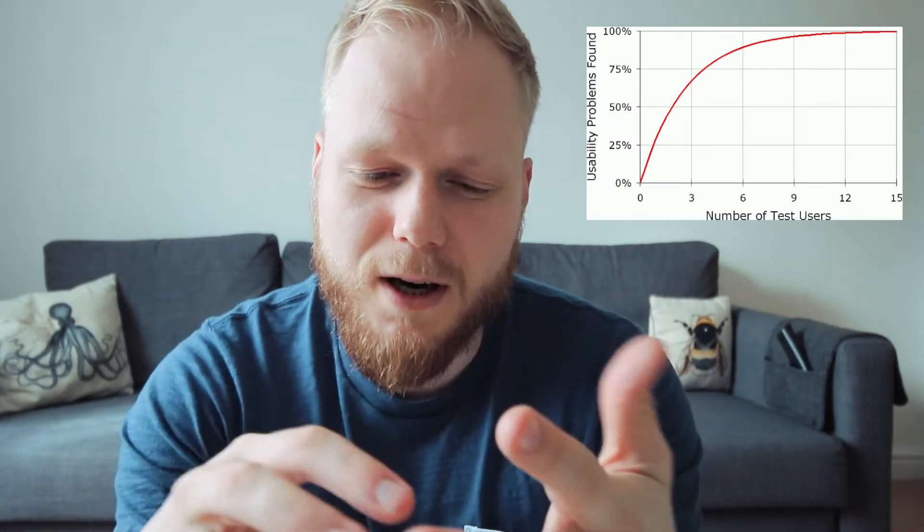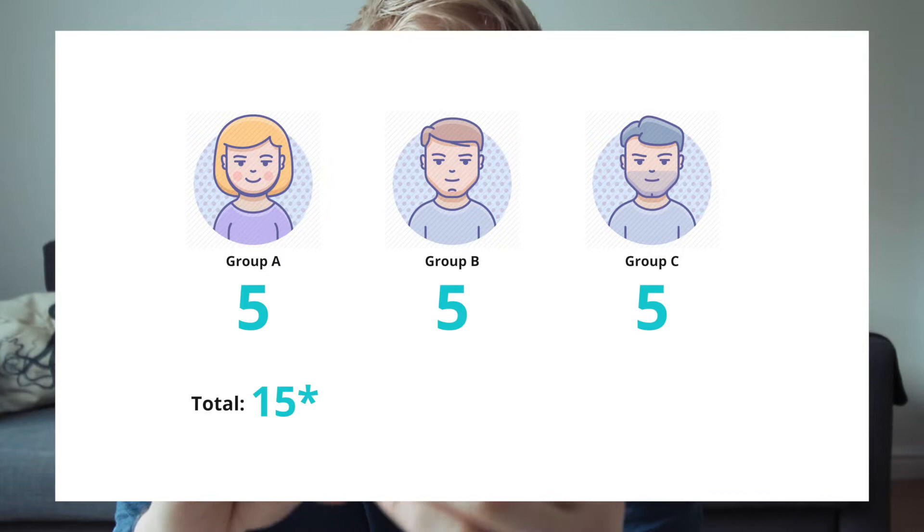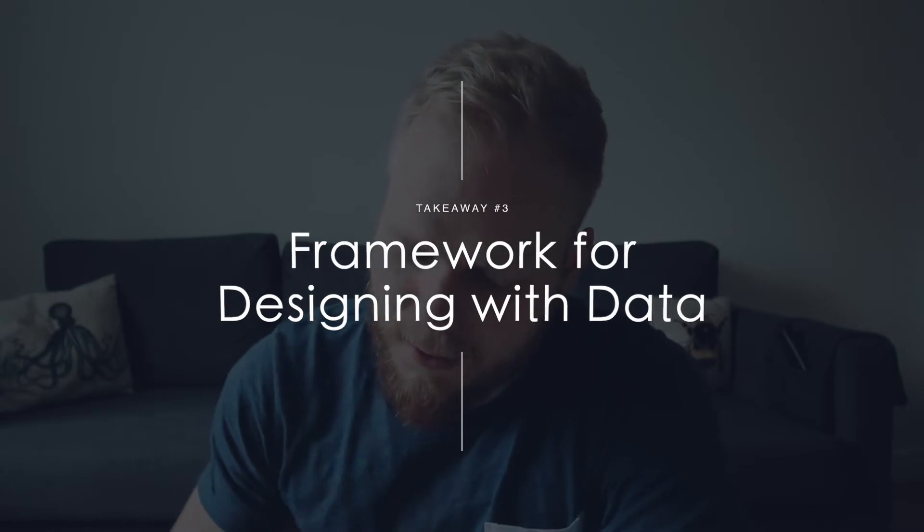Number two: how much data is enough data? You can run an unlimited number of experiments and find different key insights before deciding it's good enough. One example from the book is the Nielsen Norman Group approach to user testing, where just five people per user group gives you around 85% of all usability problems. If you know exactly how many people to include in your sample for a specific experiment, you'll know the likelihood of it being correct and causal.